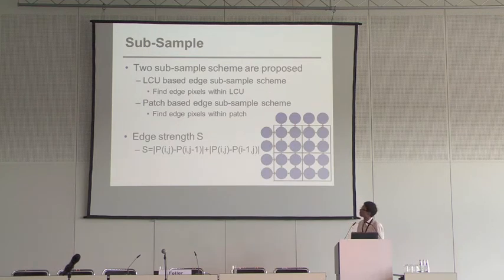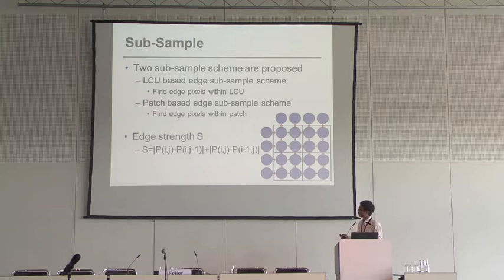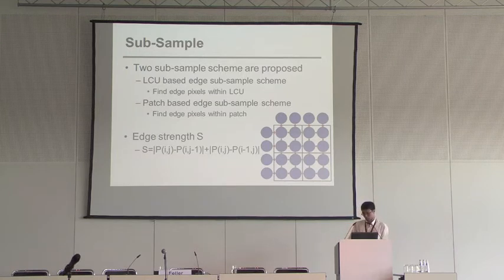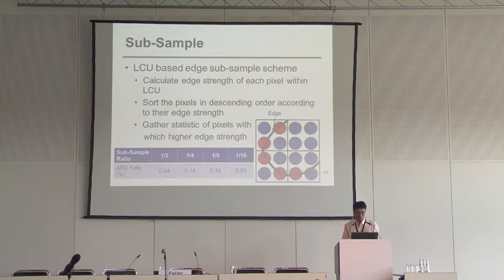We observed that edges play a very important role in the adaptive filter, so we started thinking about using edge information to help us sub-sample more efficiently. Therefore, we propose two sub-sampling schemes: the first one is the LCU-based edge sub-sampling scheme, and the other one is the patch-based edge sub-sampling scheme. First, I will introduce one concept called edge strength. The concept is very simple: you calculate the difference from left pixels and upper pixels, then take the absolute value. We use this value to denote whether a pixel is an edge or not.